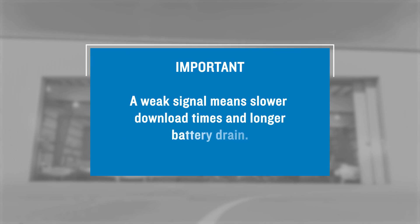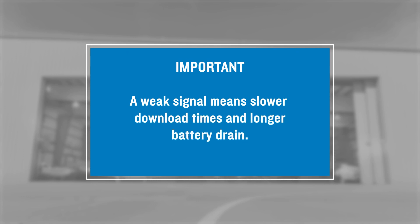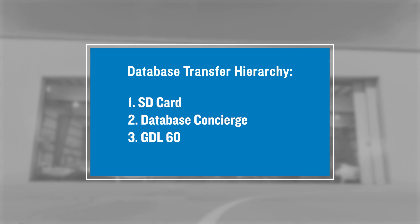It's important to keep in mind that the GDL60 needs to have LTE or Wi-Fi coverage to be able to download databases. Also, if the signal is weak, expected download times could be longer and thus drain more power from the battery. Keep in mind that other database transfer options will still be available to use. The SD Card Update option, as well as Database Concierge, will always have higher priority. For instance, if there is an SD card in the system, the GDL60 will not update because the SD card has priority regardless of the database age. It is therefore recommended to remove any SD cards from the system prior to attempting a Database Concierge or GDL60 database update.